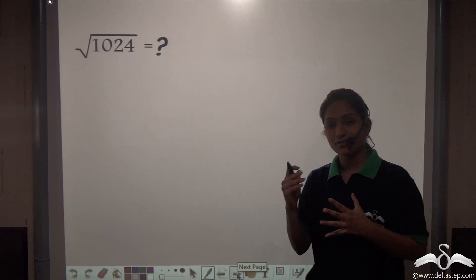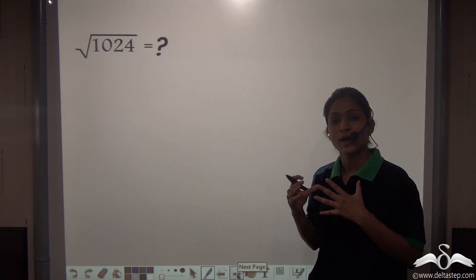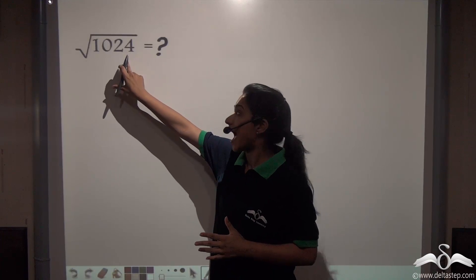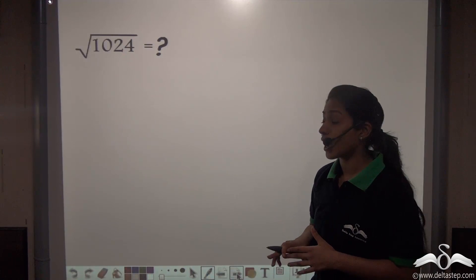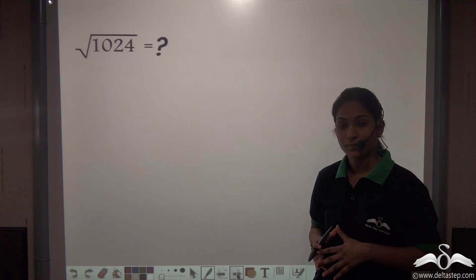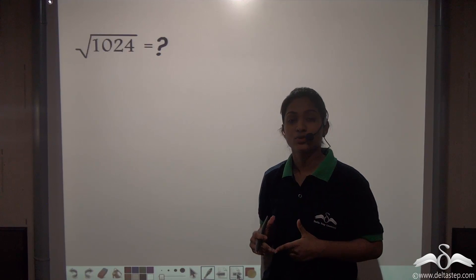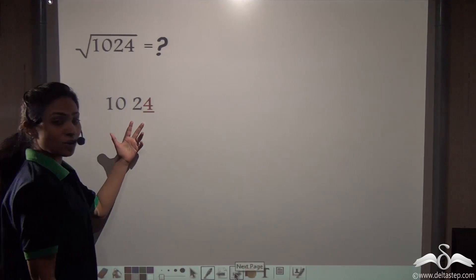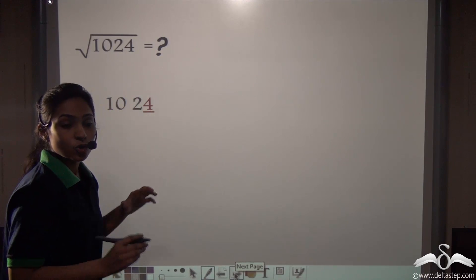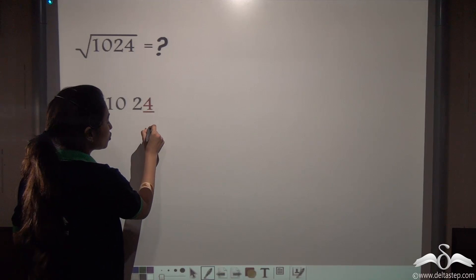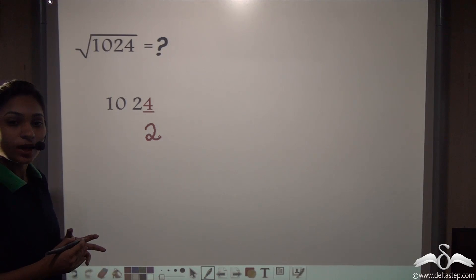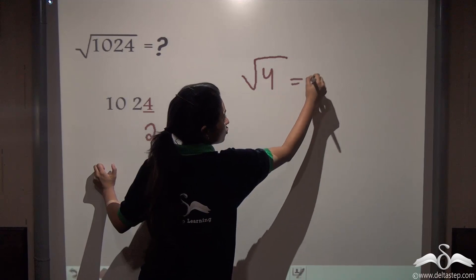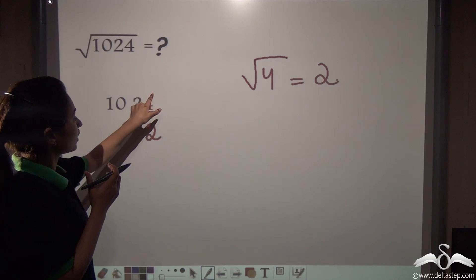Till now you have learnt how to identify the unit digit of a square of a number just by looking at the unit digit of the number itself. Now let's go opposite. Here we have given you a square number, and just by looking at the unit digit of this square, I can tell you what is the square root. This is a very fast method of calculating square roots, also known as a procedure of Vedic Maths. First of all, look at the unit digit of this number — it is 4. So I can say that the square root will have 2 in its unit digit, since the square root of 4 is 2.